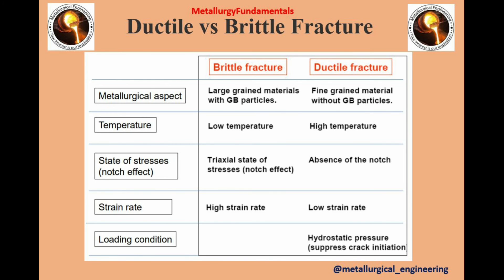Here are some differences between ductile and brittle fracture from different aspects. From a metallurgical aspect, brittle fracture happens in materials having large grain size with grain boundary particles, while fine-grained material without grain boundary particles is characteristic of ductile materials. Brittle fracture happens at lower temperatures while ductile fracture is observed at high temperatures. A triaxial state of stress is observed during brittle fracture, while absence of a notch is observed in ductile fracture. Brittle fracture occurs at higher strain rate and ductile fracture at lower strain rate. Generally, BCC and HCP metals tend to be brittle while FCC metals tend to be ductile.